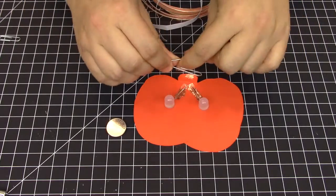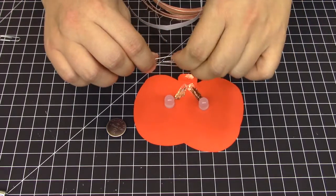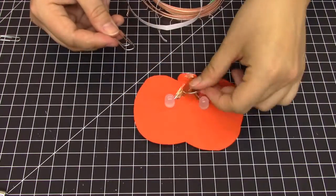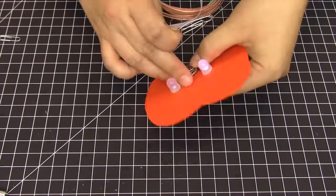Next take your paper clips and bend them into a triangular shape as shown. Slip this around the battery and this will hold it in place.